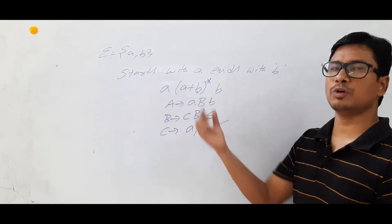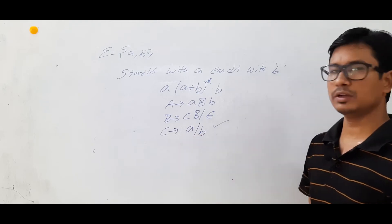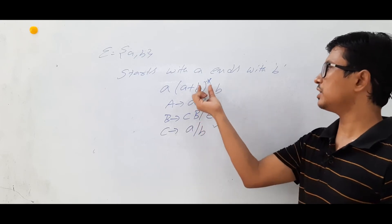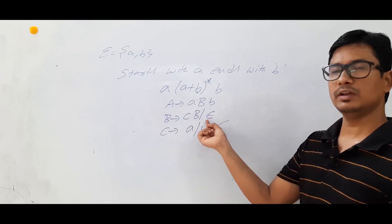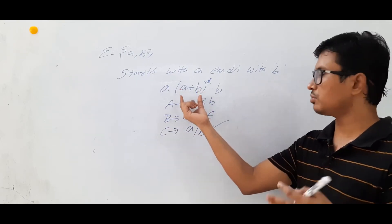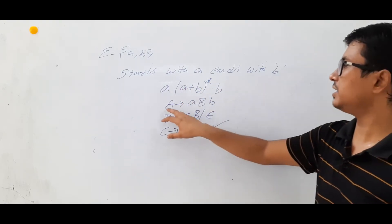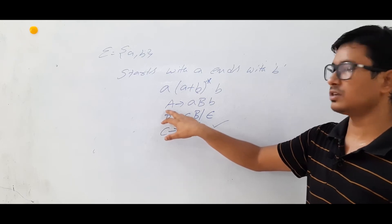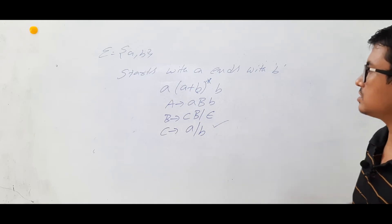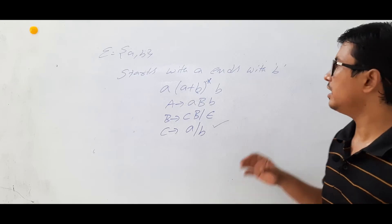Let me explain how I derived it. The smallest pattern is (a ∪ b), so C → a | b. Then B → CB | ε, because for the Kleene closure we either get epsilon or we generate (a ∪ b) one or more times. Once I got this pattern, the remaining part is easy: A → aB, where 'a' is a terminal and B handles the rest, ending with 'b'. This is the grammar for all strings starting with 'a' and ending with 'b'.